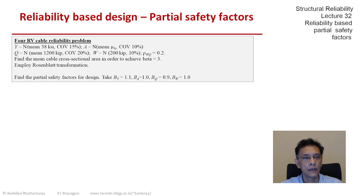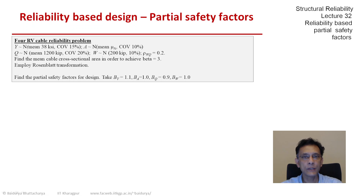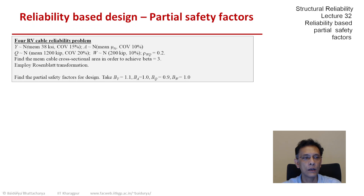They are all normally distributed. We need to find the mean cable cross-sectional area — that's the only unknown or only degree of freedom that we have — and we would like to achieve a beta of 3. Corresponding to that, we would then like to find the partial safety factors to be used in a design equation. The additional information we need, because we are going to use nominal quantities in the design equation, is the bias factors, which have been given in the last line of the problem statement. Since there is a dependence involved and we don't want to lose that information, we will employ the Rosenblatt transform.